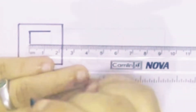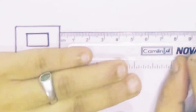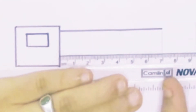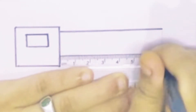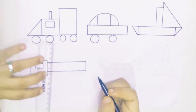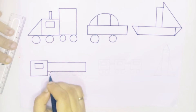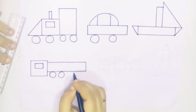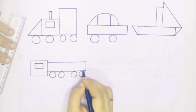Now we are going to draw a truck. Draw a square shape, draw a small rectangle shape, draw another small rectangle shape, and draw a circle shape for wheels.